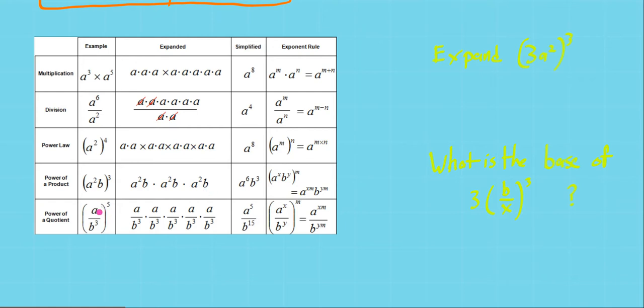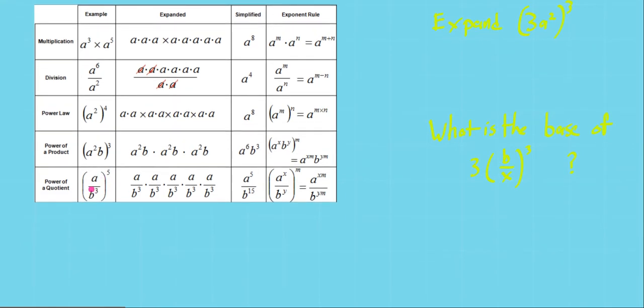If you have a quotient, and there's a power on that quotient, like here, a over b cubed, all to the 5th power, that's like a to the 5th, and b to the 3 times 5, or b to the 15. So a to the 5th on top and b to the 15 on the bottom.